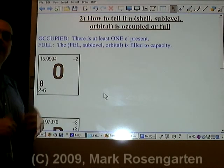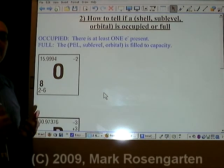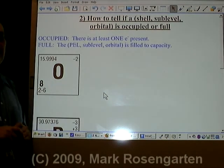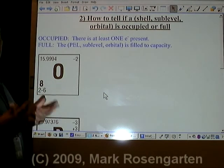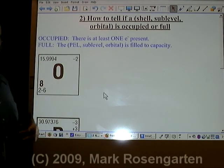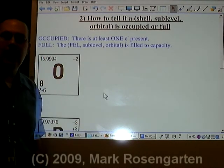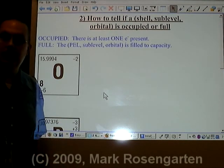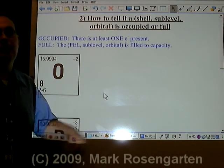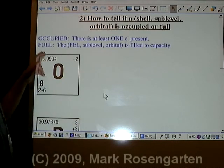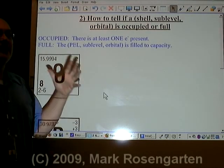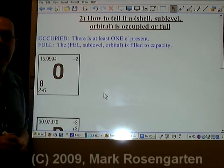Here's how to tell whether sublevels, principal energy levels, and orbitals are occupied or full. If the energy level, sublevel, or orbital is occupied, all you need is one. It takes just one person to occupy a room. Right now I'm the only person in this room, therefore I am occupying this room. That's different from full. Full means you've got the maximum number you can possibly have in there.